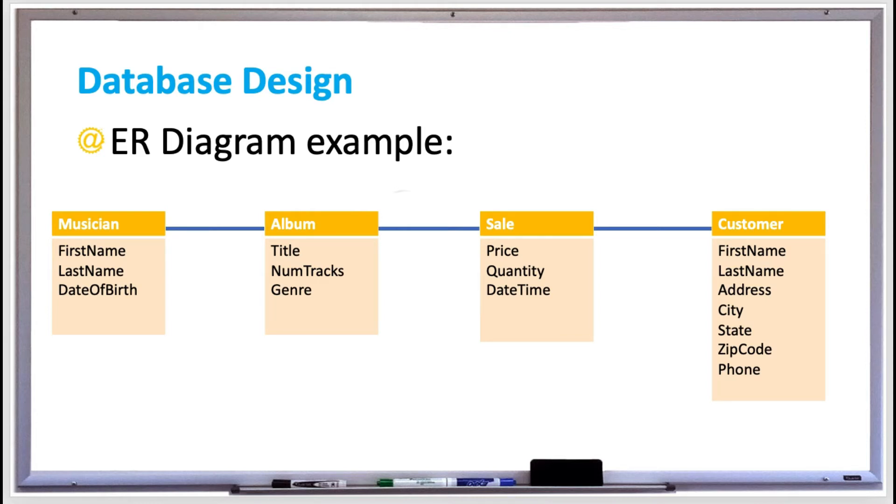Relationships between these entities are represented by the lines between the rectangles. For example, a musician makes an album, and then the album is sold in some kind of transaction, and it's sold to a customer.